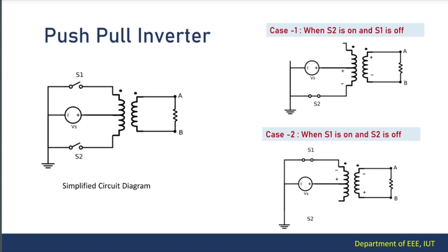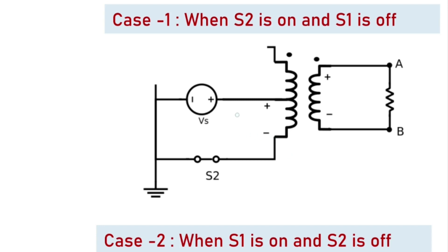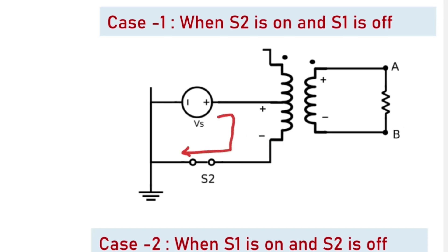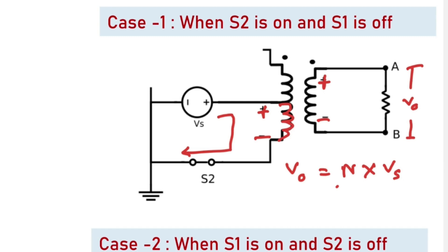The push-pull inverter basically works in two modes. One is when S2 is on and S1 is off, and another mode is when S1 is on and S2 is off. When S2 is on, the current on the primary side will pass through that path. Correspondingly, voltage will be induced in the primary coil and subsequently in the secondary coil, giving us a voltage at the AB terminal equal to the turns ratio times the source voltage. Assuming a turns ratio of 1, the voltage at AB terminal equals Vs.